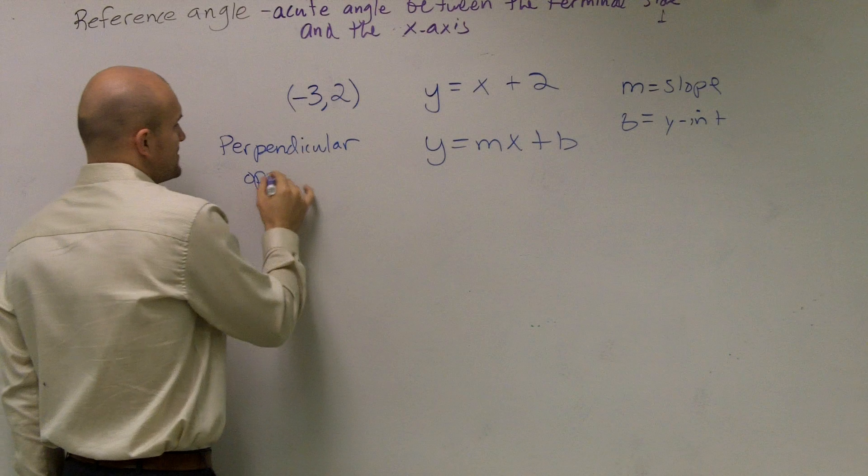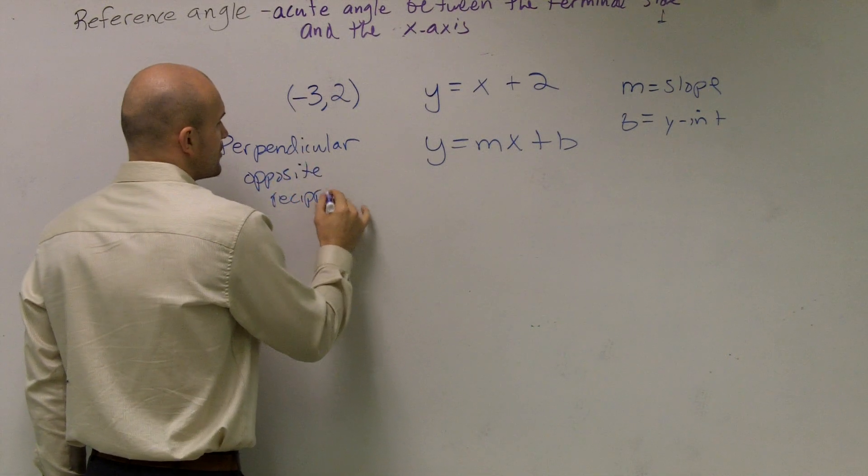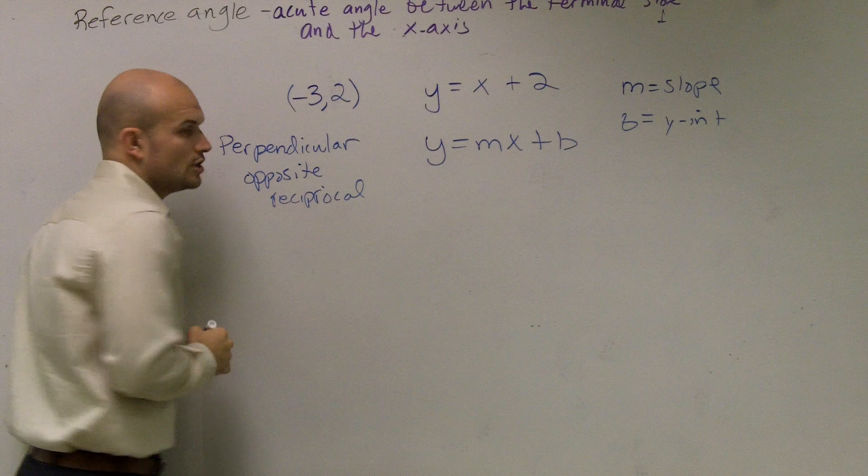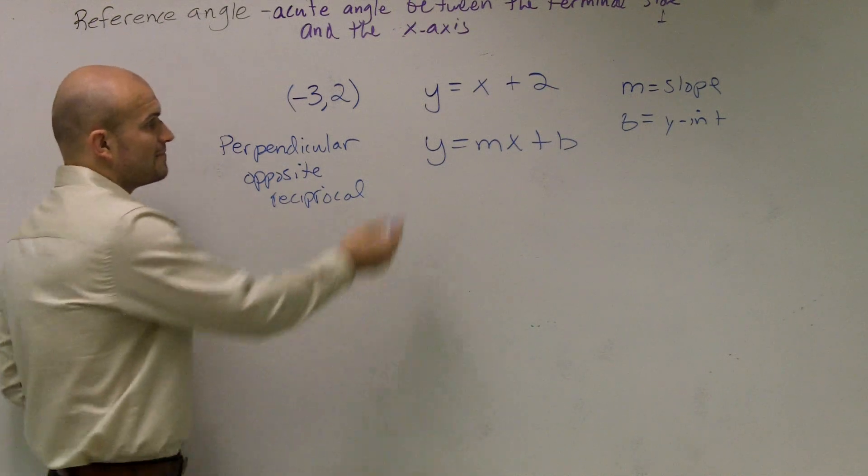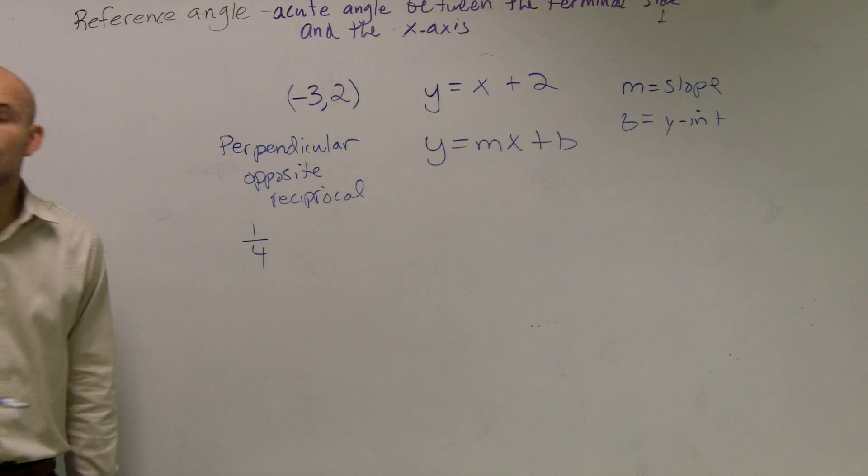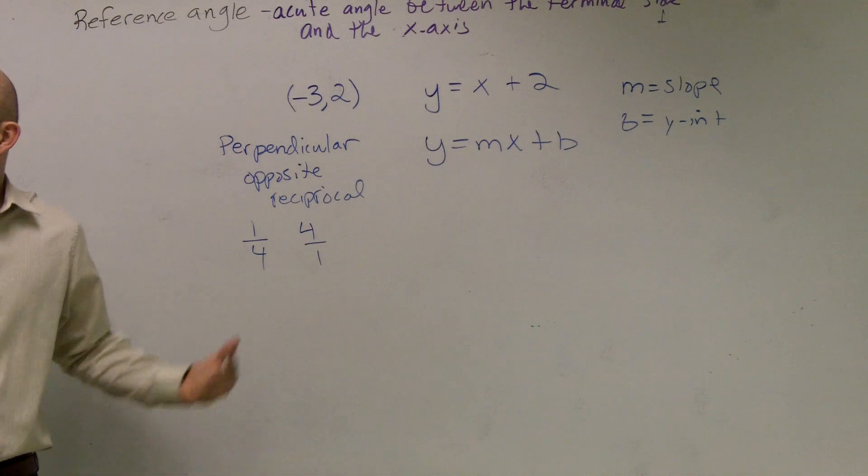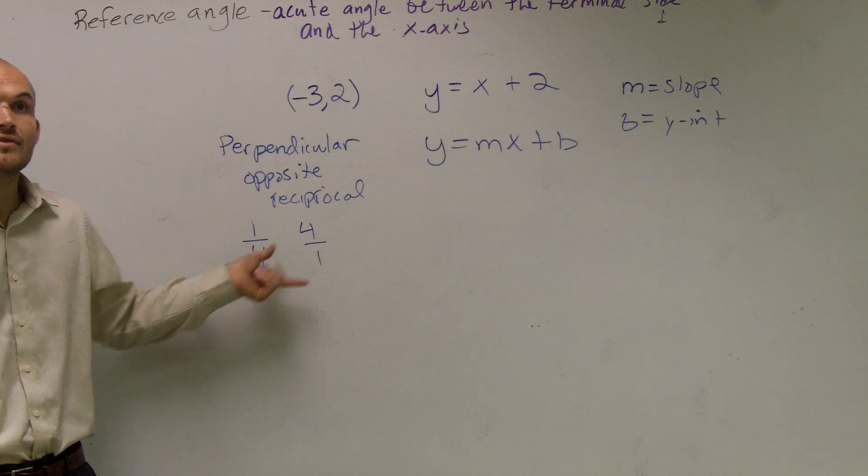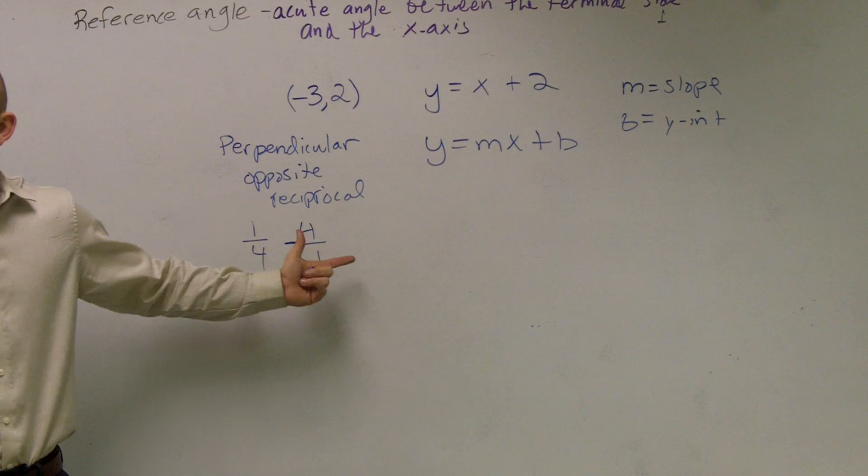perpendicular lines have what's called opposite reciprocal slopes. So what that means is if I have my slope over here, let's say I'm given a slope of one-fourth, the reciprocal is four over one. And remember, the opposite means if one is positive, then the other slope is negative. So those are what we call opposite reciprocal slopes.